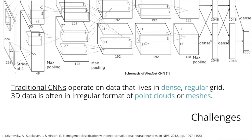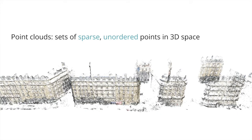Traditional CNNs operate on data that lies in a dense regular grid, making them unfit to process 3D data, which is predominantly in the irregular format of point clouds or meshes. Point clouds, the 3D data representation of interest in this work, are sets of sparse unordered points, and are difficult to process with traditional CNNs.